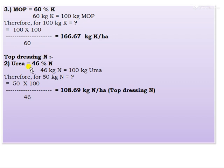For top dressing: the second split of 50 kg nitrogen also requires 50 × 100 ÷ 46 = 108.69 kg urea per hectare. Both basal and top dressing nitrogen are equal at 108.69 kg urea per hectare each.